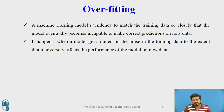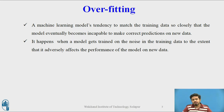To be precise, overfitting happens when a model gets trained on the noise in the training data to the extent that it adversely affects the performance of the model on new data. Now let us look at what exactly we mean by underfitting.